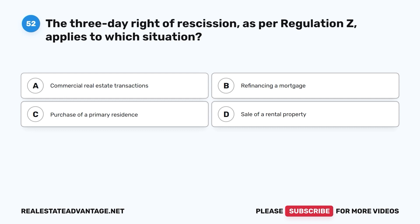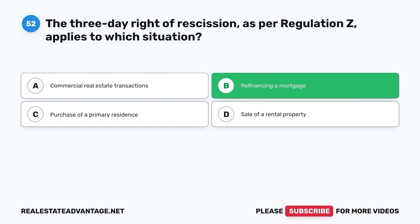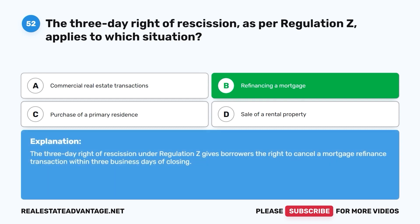Question 52. The three-day right of rescission, as per Regulation Z, applies to which situation? A. Commercial real estate transactions. B. Refinancing a mortgage. C. Purchase of a primary residence. D. Sale of a rental property. The correct answer is B. The three-day right of rescission under Regulation Z gives borrowers the right to cancel a mortgage refinance transaction within three business days of closing.